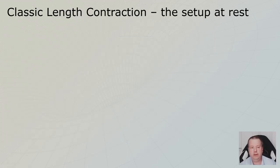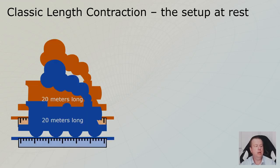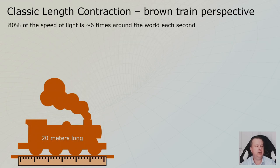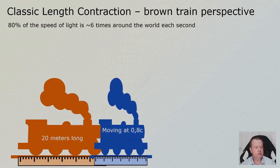So this was the setup I introduced in level A. We have two trains and both of them are exactly the same length when they are at rest. And the blue train will be traveling at 80% of the speed of light to the right, which is pretty fast. It's about six times around the world each second. Let's see the animation what happens if that train goes that fast.